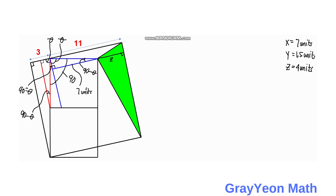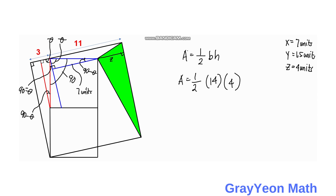For the final step, we calculate the area of the triangle. Area equals one half times base times height. The base is 14, the full length of the largest square's side, and the height is z with a value of 4 units. So 14 divided by 2 equals 7, times 4 gives us an area of 28 square units.